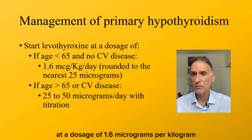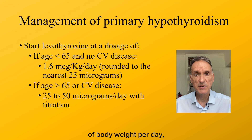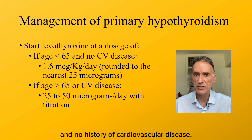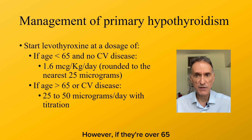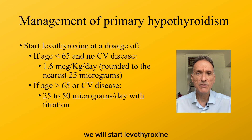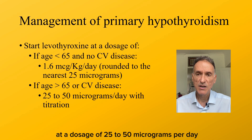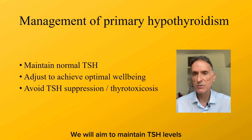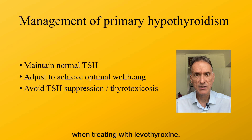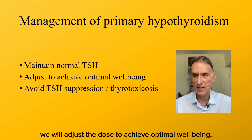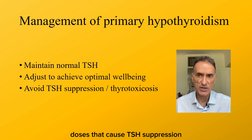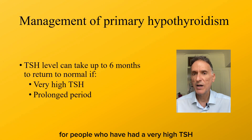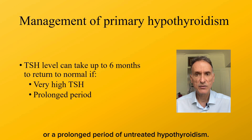We will start levothyroxine at a dosage of 1.6 mcg per kg of body weight per day, rounded to the nearest 25 mcg, for adults under 65 with primary hypothyroidism and no history of cardiovascular disease. However, if they are over 65 or have a history of cardiovascular disease, we will start levothyroxine at a dosage of 25 to 50 mcg per day with titration. We also need to be aware that the TSH level can take up to six months to return to normal for people who have had a very high TSH or a prolonged period of untreated hypothyroidism.